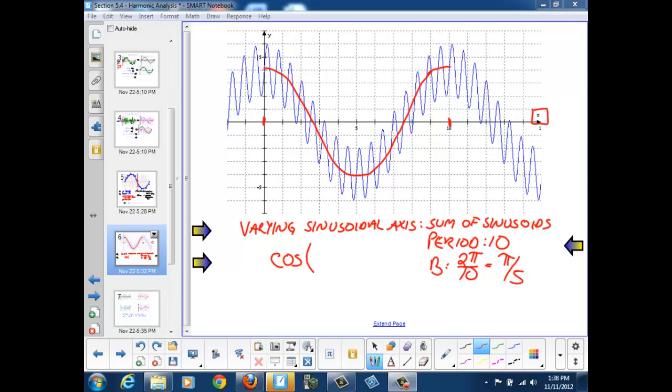So we'll have the cosine of pi over 5 times x as my initial function, and its amplitude appears to be 4.